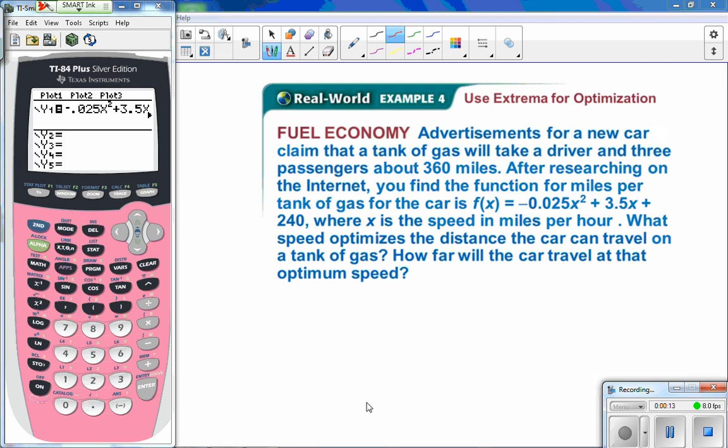So this is a fuel economy problem. Advertisements for a new car claim that a tank of gas will take a driver and three passengers about 360 miles. After researching on the internet, you find the function for miles per tank of gas for the car is f of x, and you can see the equation given there. Where x is the speed in miles per hour, what speed optimizes the distance the car can travel on a tank of gas? How far will the car travel at that optimum speed?